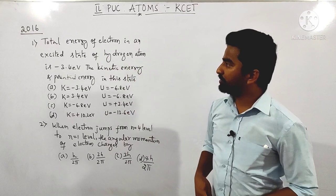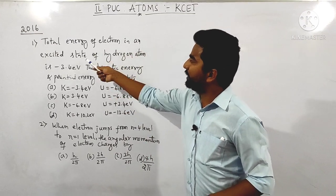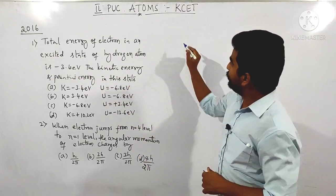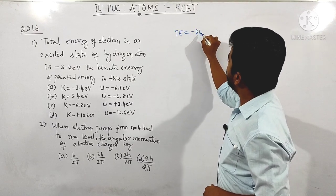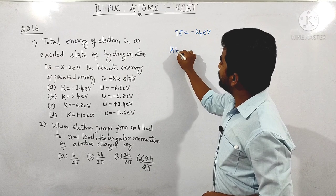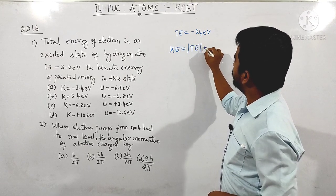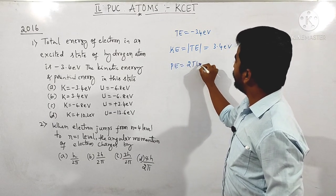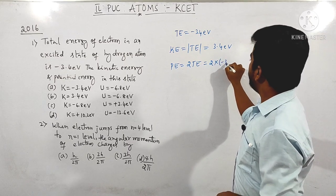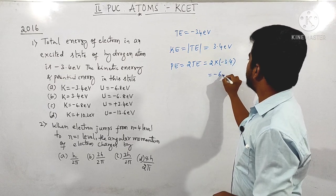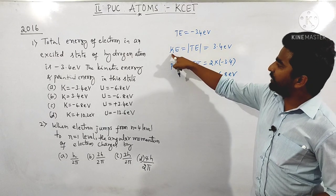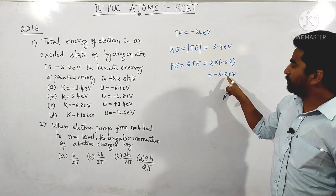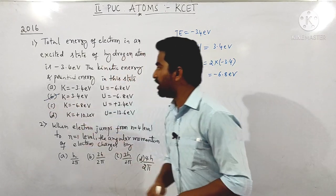Next question asked in 2016: the total energy of an electron in an excited state of hydrogen atom is −3.4 eV. What are the kinetic energy and potential energy in this state? Total energy = −3.4 eV. Kinetic energy = magnitude of total energy = 3.4 eV. Potential energy = 2 × total energy = 2 × (−3.4) = −6.8 eV. The answer is 3.4 eV (option B).